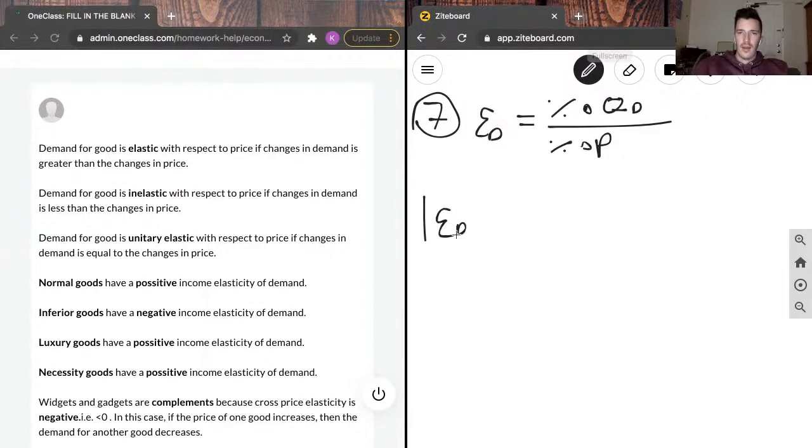There's essentially three scenarios. The absolute value of the elasticity of demand can be less than one, can be equal to one, or it can be greater than one.